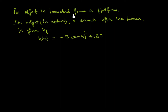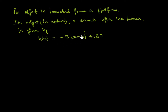An object is launched from a platform. Its height in meters, x seconds after the launch, is given by h of x equals negative 5 times x minus 4 whole square plus 180.